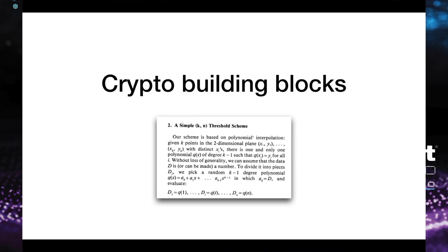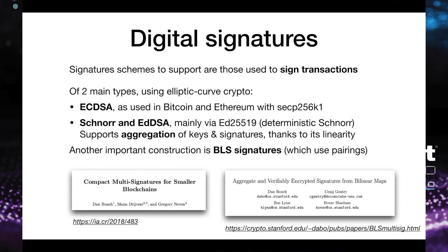What cryptography is needed to build TSS? In the blockchain space there are two main types of signatures: ECDSA, used in Bitcoin and Ethereum, and EdDSA / Ed25519, which are based on the Schnorr signing paradigm. Schnorr has the benefit of not using a unique nonce per signature, avoiding some attack classes, and also makes aggregation of keys and signatures easier. BLS signatures use cryptographic pairings and make aggregation of different keys into a master key and multiple signatures into one much easier than classical signatures.